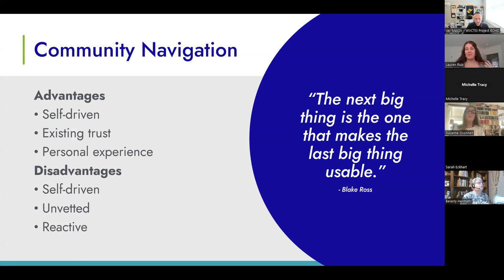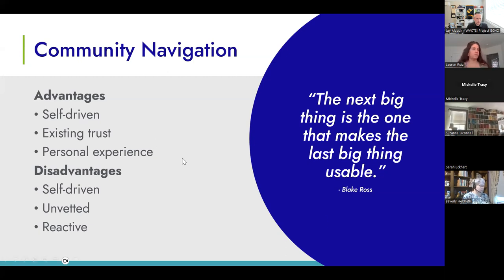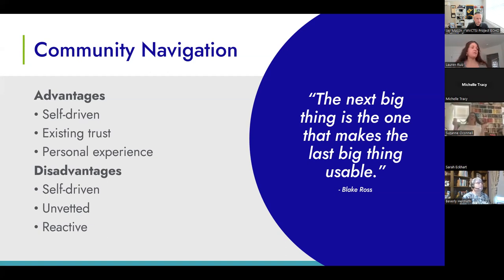Some of the disadvantages are that it's self-driven — there's not necessarily any direction. People could be sort of languishing and not really sure what to do next or where to go. The resources could be unvetted and might not be the best fit for the individual's needs. Often with this type of navigation we're really being reactive — the individual already has a concern or need that has arisen, spurring them to seek out more information. Our biggest challenges in community navigation tend to be awareness: how do we find the resource, know what we need, connect with it? And usability — once they find the resource, can they really access it and maintain it?